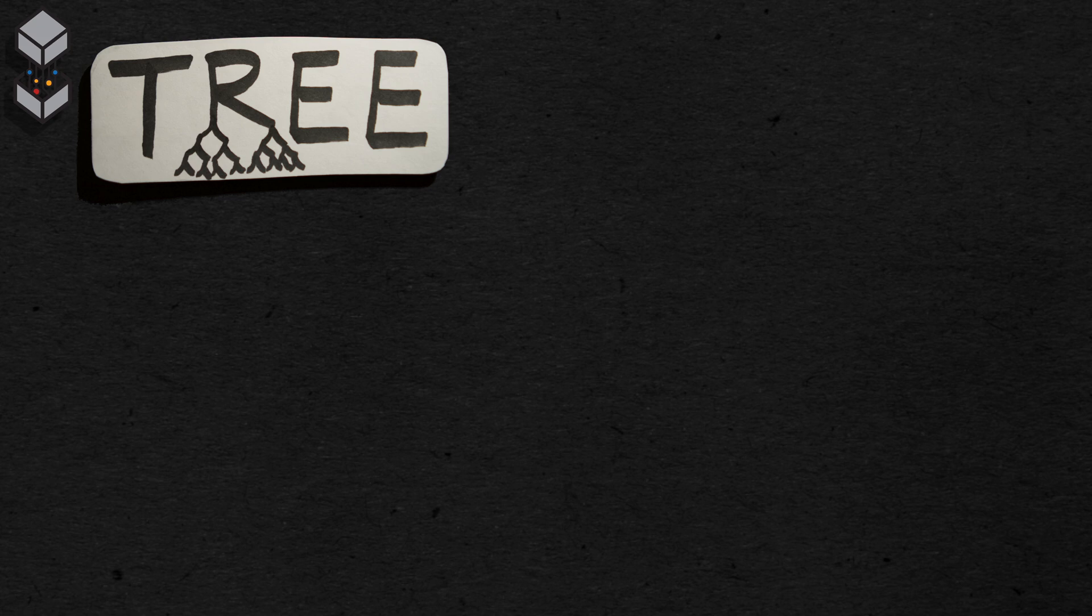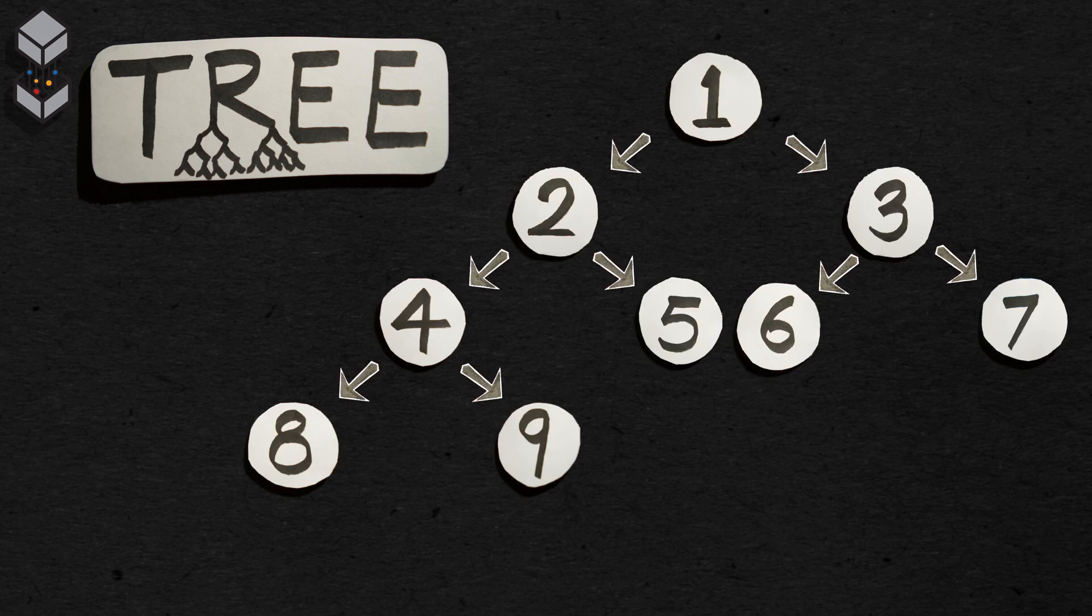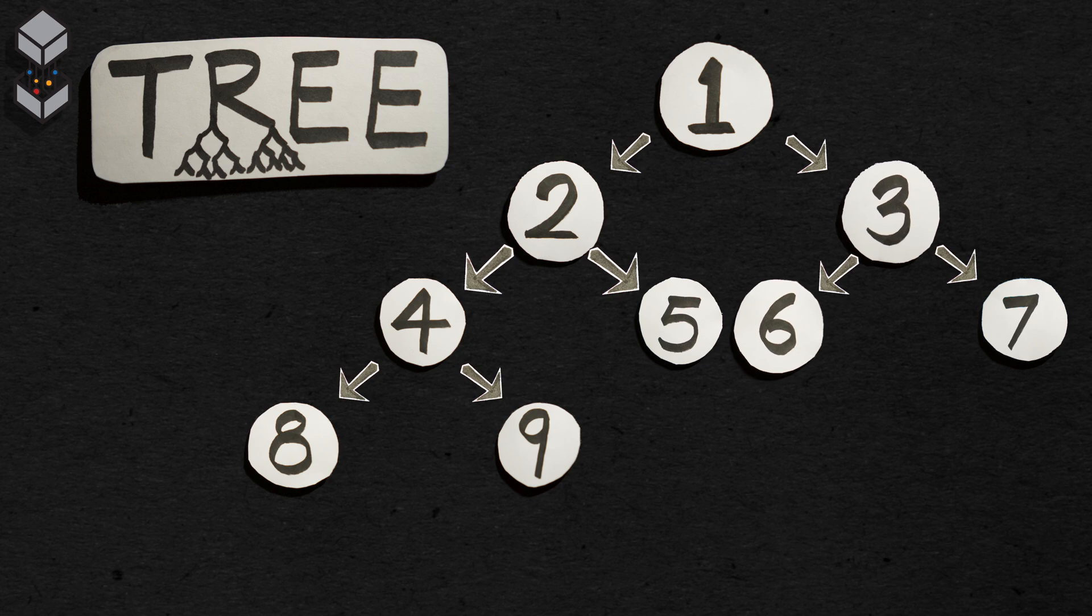A search tree is another type of data structure. It looks similar to an upside-down tree. In this data structure, each node may have more than one pointer to another node, as opposed to a queue, where there's only one connection. In search trees, one node can have many connections. A tree always reads from top to bottom, and the first node is called the root.